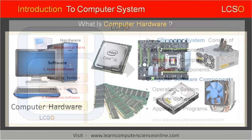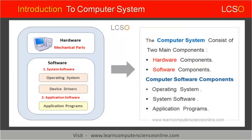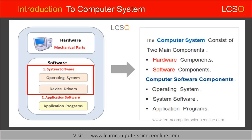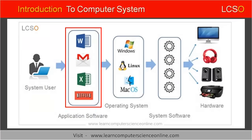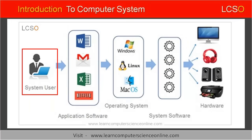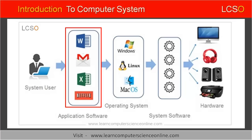The computer system needs two types of software components to function. The first type is called the application software, and the second type is called the system software. The application software is directly used by the system user to perform different tasks on the computer, such as Microsoft Word and PowerPoint.